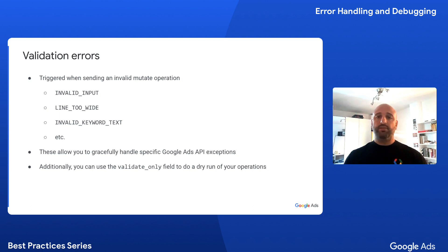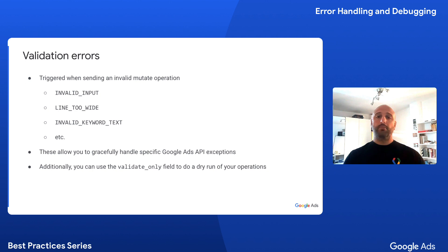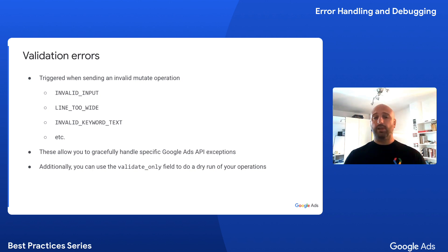For a deep dive into error handling and how to understand the different components of an error response, check out my teammate Andrew's webinar. You can also explicitly perform input validation before submitting data to the Google Ads API by using the validate_only field in your requests to perform a dry run of operations and to make sure they don't trigger any validation errors.